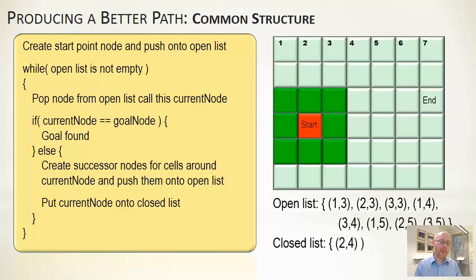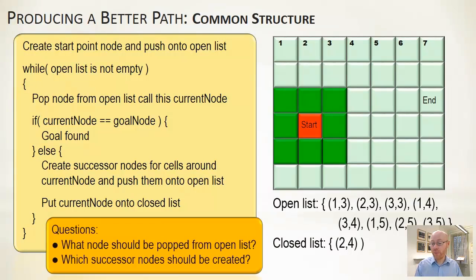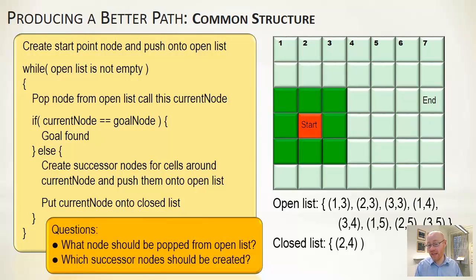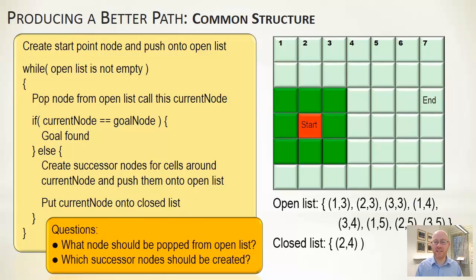Two key questions differentiate these algorithms: which node should be popped from the open list when there are many options, and what successor nodes should be created — specifically, are we adding nodes we've already been to, or only new unvisited ones? The choice from the open list is the primary differentiator between the algorithms.